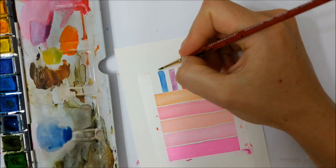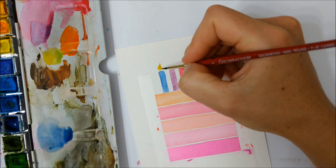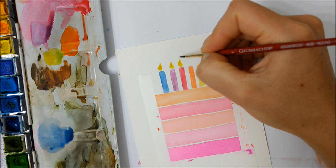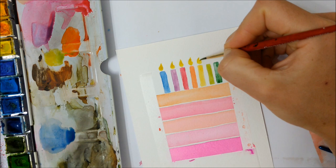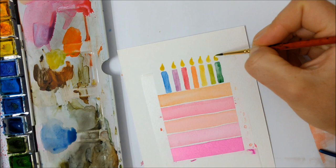Once your candles have completely dried, you can begin to add the flames. Using yellow watercolor, I like to paint a little ball on top of the candle and then just add a little wispy point to it. Just make sure your points aren't too straight because you do want to make it look a little bit realistic.